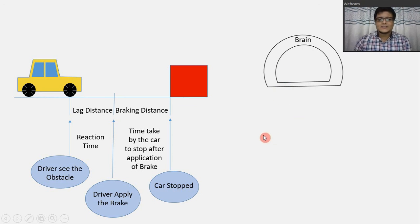And when the driver sees the obstacle, some impulses will be transmitted into his brain. So, this is the perception of the driver. Now, after the information received by the brain, the driver will think that what he needs to do.